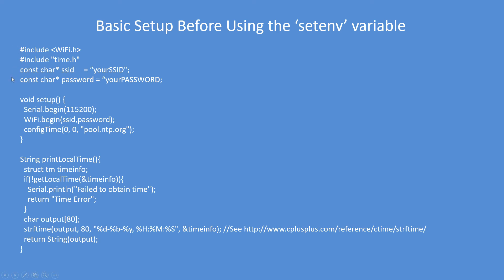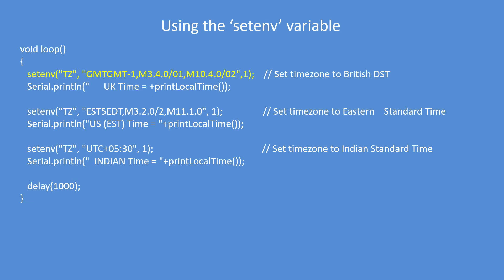Just to recap, here's the basic setup required for your program: set up your WiFi, start the WiFi service, start the time service, and have a function to extract time — no need to vary this time function at all. Then to switch time zones, set your environment variable accordingly for your country. The advantage is that daylight saving is all taken care of.